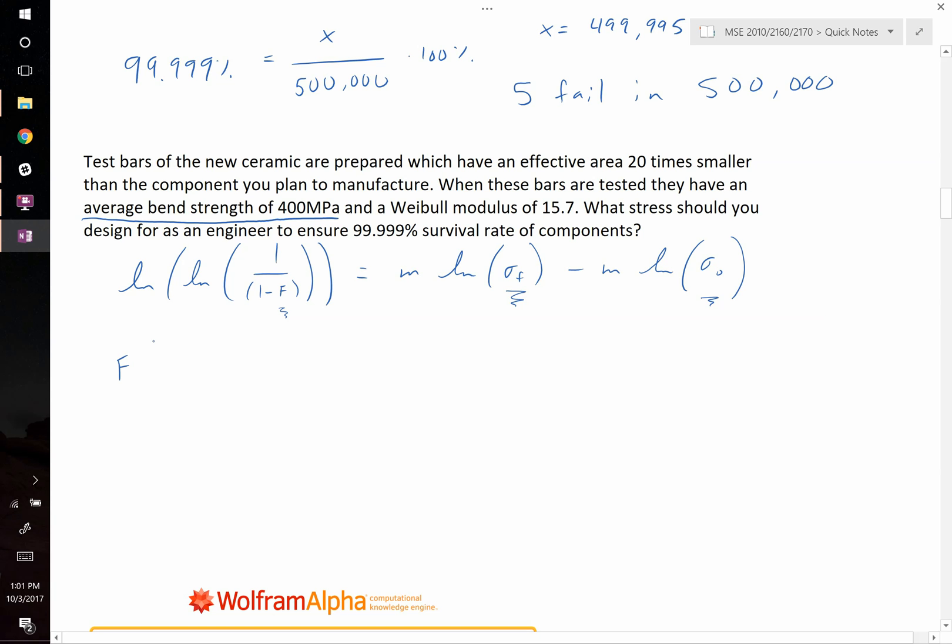Average implies that half of your samples fail. Half of it fail above, half of it fail below. Therefore we can set F equal to 1 half. Now we have the natural log of the natural log of 1 over 1 minus 1 half is equal to 15.7 times the natural log of our failure stress, 400 MPa, minus the Weibull modulus times the natural log of our characteristic strength. When we go ahead and solve our characteristic strength or stress, it's equal then to 409.45 MPa.